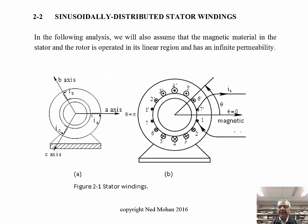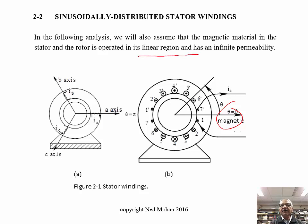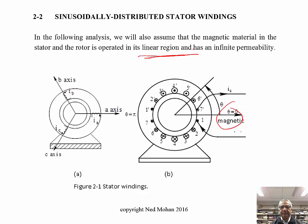Let's start with just one phase. We always pick phase A, and its magnetic axis is along the horizontal axis here, theta equal to zero. This machine has three stator windings, shown along their respective axes: A, B, and C. We'll assume we are operating this machine in a linear region, and the magnetic material for the stator and rotor has infinite permeability, which is not a wild assumption. So the main reluctance the air flux encounters is really the reluctance in the air gap.